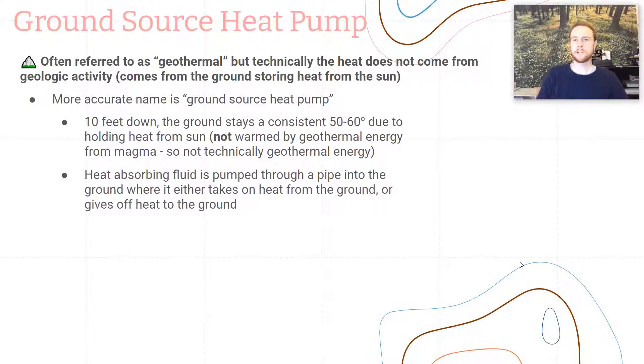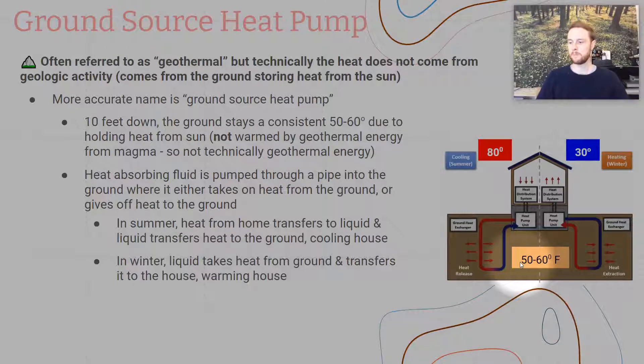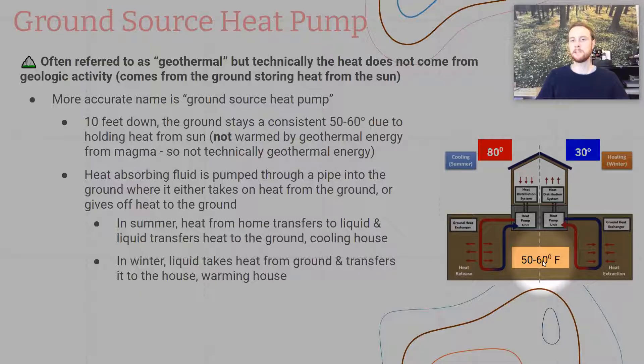Basically what happens is the home will have almost like a second plumbing system added, where there's going to be a pipe and a series of tubes that go down into the ground. And then you have some sort of heat absorbing fluid. Now this will be piped into the ground, and it's either going to absorb heat from the ground in the winter to heat your house, or pass heat from your home into the ground during the summer to cool your house. Notice again, we have that consistent 50 to 60 degree temperature about 10 feet down in the ground year round. And one more time I want to highlight, this is due to the sun. The sun heats Earth's surface, and that heat is transferred underground. It's not due to the heat from magma, which is the case with true geothermal energy.